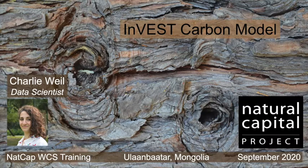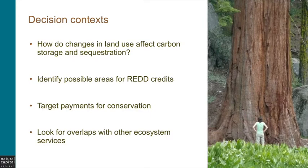However, it's still a very useful and widely used model. Indeed, terrestrial ecosystems store more carbon than the atmosphere, so they are vital to influencing climate change. Terrestrial carbon sequestration and storage is perhaps the most widely recognized of all ecosystem services. The social cost of a ton of CO2 released into the atmosphere is estimated somewhere between 10 to 100 US dollars, so this model is used in many decision contexts.